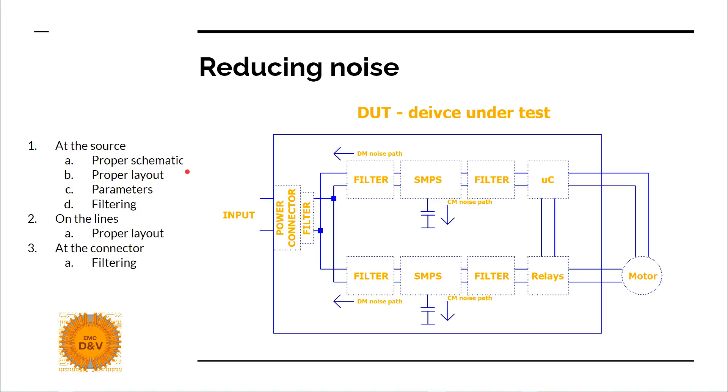What you need to have is the right schematic with the right component values and component placement, because then the layouter will know which component should be closer to SMPS inputs. You also need to have the right component parameters, and perhaps most importantly, you must have filters at the input and the output of your SMPS. Proper layout between SMPS and the power connector is also important, and at the end, you will need filtering at the device connector.